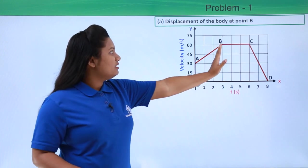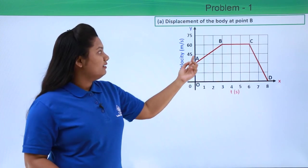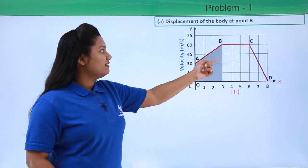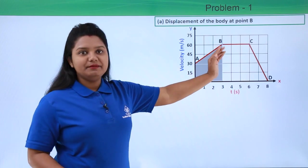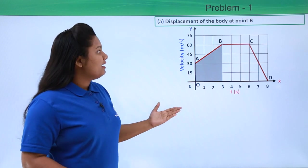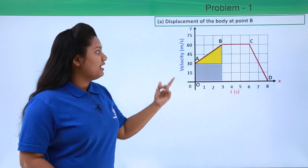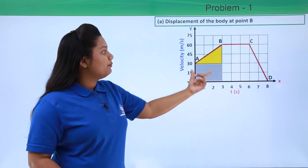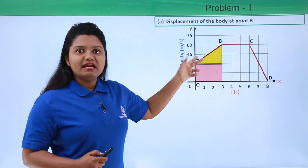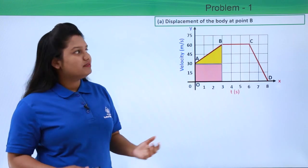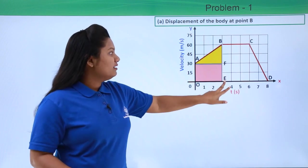Since we need to calculate the displacement at point B, we need to calculate the area under the graph from A to B. This shaded area gives us the displacement at point B. We'll find this area by dividing it into two parts: the upper triangular area and the lower rectangular area, then adding them together.